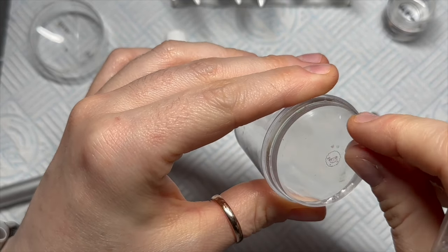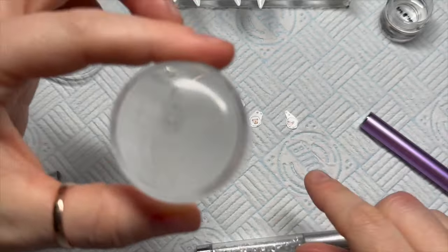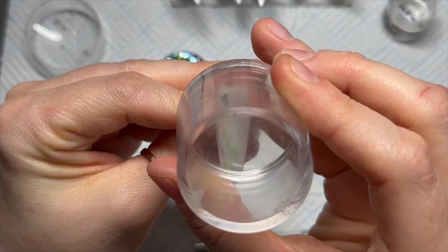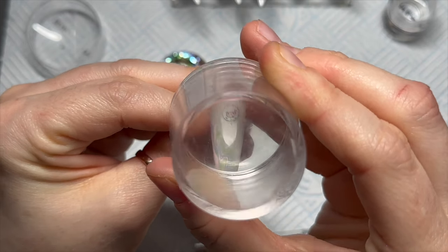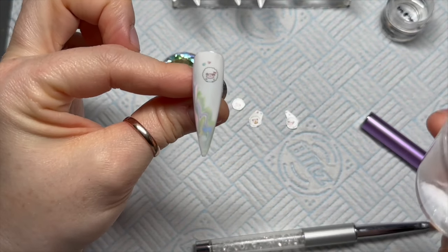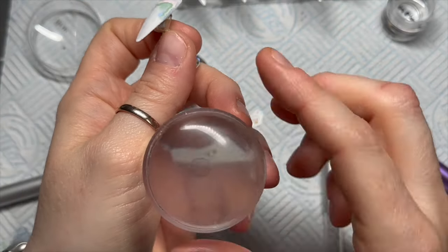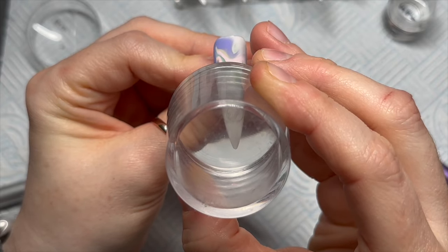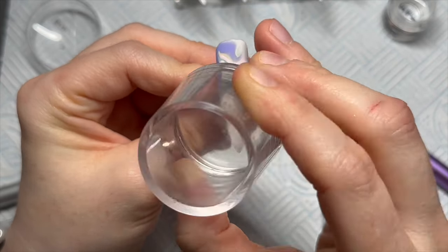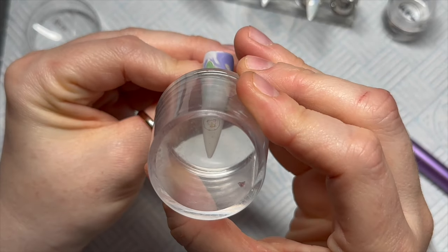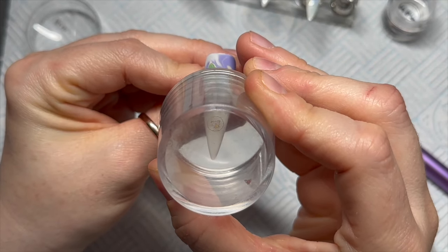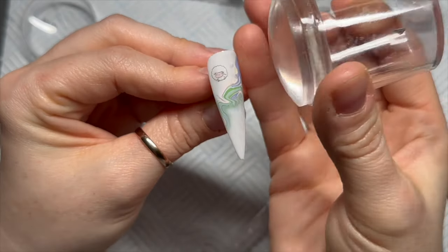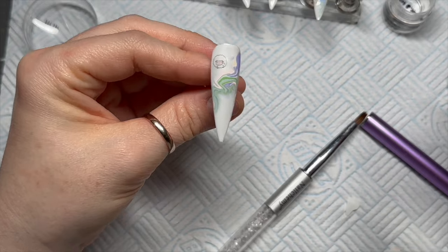Now because we're stamping onto a white background we don't need to color in the decal with some white gel polish. Because we're doing the white background, the sheep just appears wonderfully on that. I'm going to apply three more lamb decals to the other nails as well. They're so cute, I love them. All four nails now have a little lamb, look how cute they are.